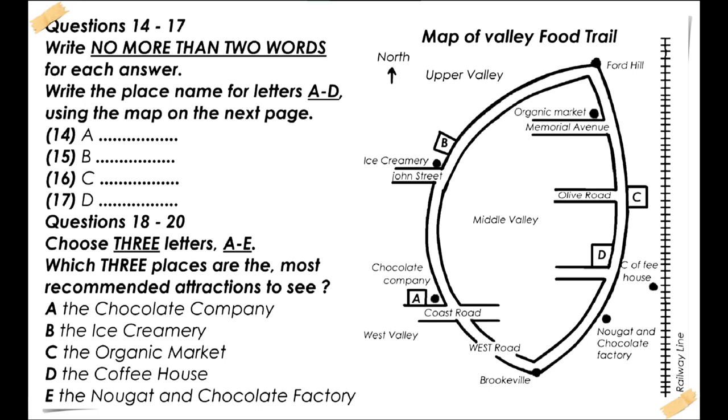This is not to be confused with the Coffee House, situated opposite on the other side of the valley on the railway line. Magic Coffee is next to the Chocolate Company, which is on the corner. Just past the Ice Cream Shop on the corner of John Street is the Fresh Produce Shop. A little further north, we have reached Ford Hill.